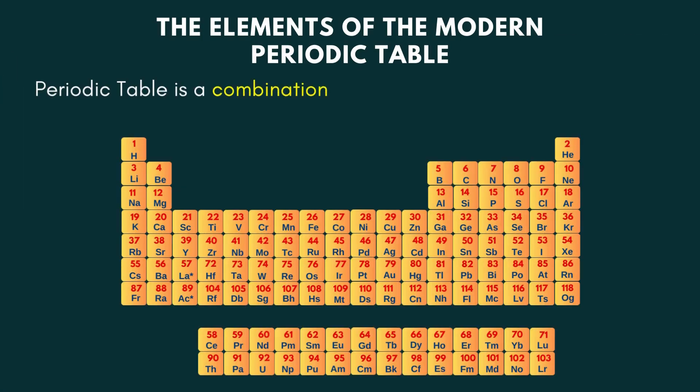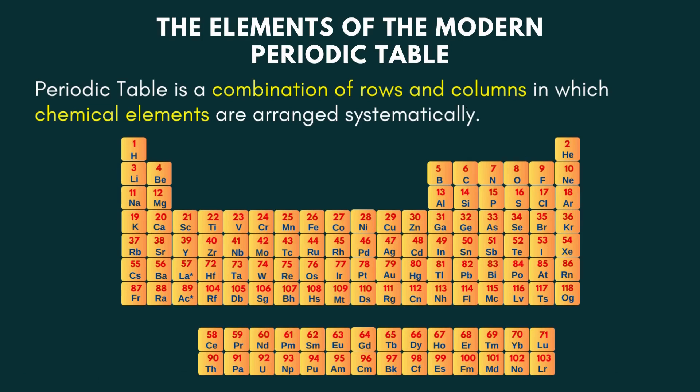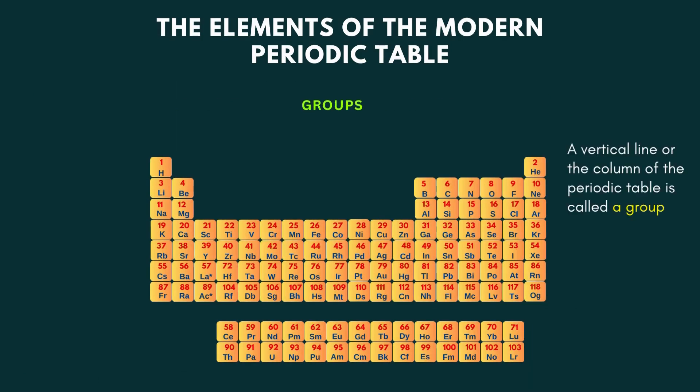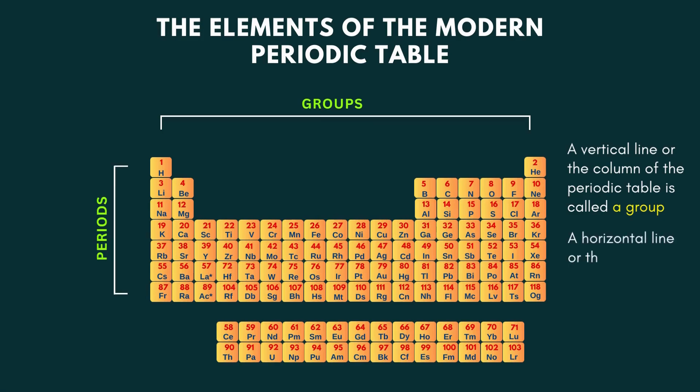Periodic table is a combination of rows and columns in which elements are arranged systematically. A vertical line or the column of the periodic table is called a group. A horizontal line or the row of the periodic table is called a period.